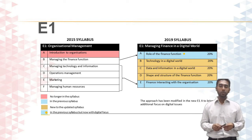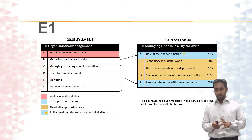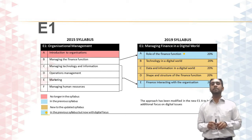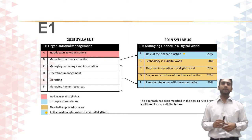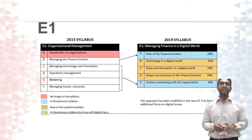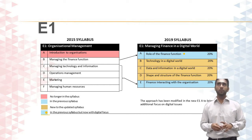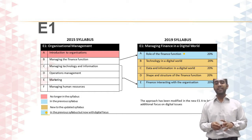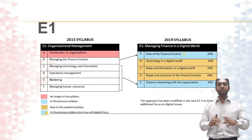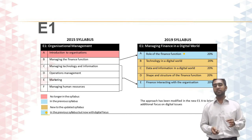There are three completely new topics coming into the syllabus, which you will need to focus quite a bit on as the material is not yet widely available. The new topics are: technology in a digital world, data and information in a digital world, and shape and structure of the finance function. These represent the biggest change you are going to come across at the operational level.